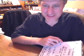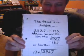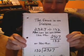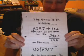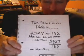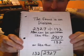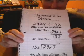The purpose of this is to help somebody learn how to do some division. The focus is on division, and there are different ways that you can write it out. For example, 2927 divided by 132 can also be written as 2927 over 132, or 132 goes into 2927.